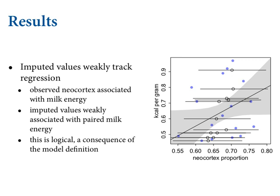Here's a scatterplot showing this. On the bottom is neocortex proportion; on the vertical is kilocalories per gram of milk. The regression line with the 89% confidence interval is shown. The closed points are the observed values of neocortex, and the open ones are the imputed values with their 89% intervals shown as line segments. You can see that they tilt right towards the line — but not much. There's tremendous uncertainty about them, but they're tilting. That slight tilt is induced by the direction the line goes. The relationship is not super strong here.